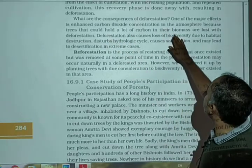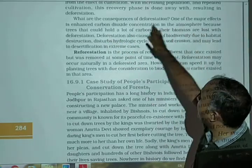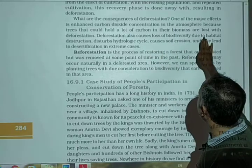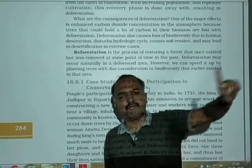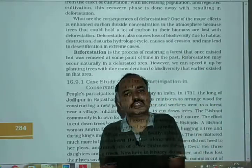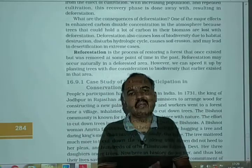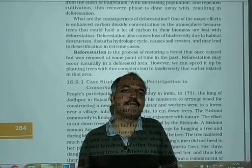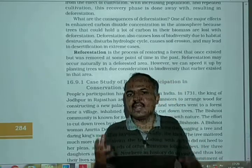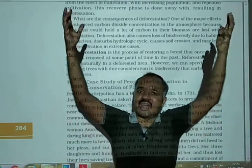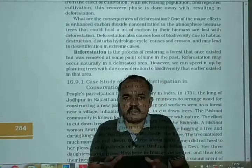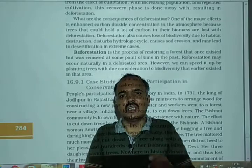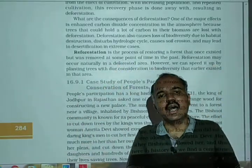One of the major effects is enhanced carbon dioxide concentration in the atmosphere, because trees that could hold a lot of carbon in their biomass are lost with deforestation. Forests fix carbon dioxide in the process of photosynthesis and produce organic matter, so they hold a lot of carbon in their body. When forests are not there, that carbon gets released and carbon dioxide will not get fixed, so there will be a lot of carbon dioxide in the air.